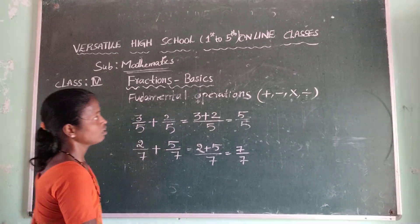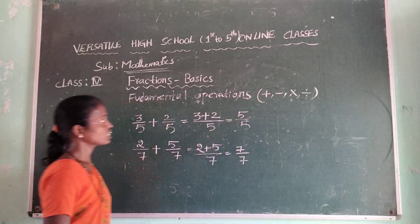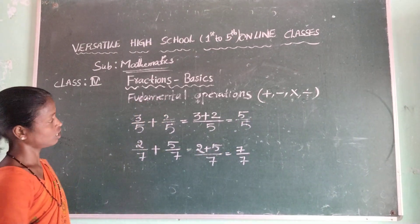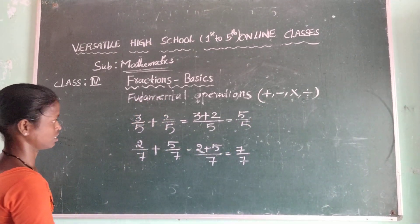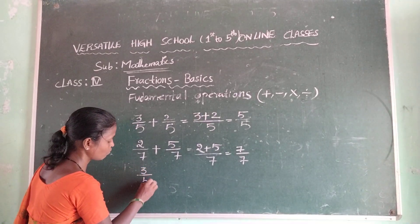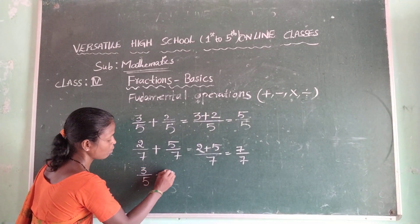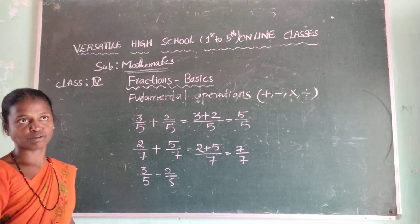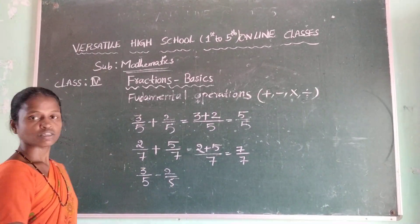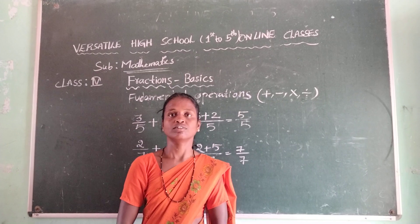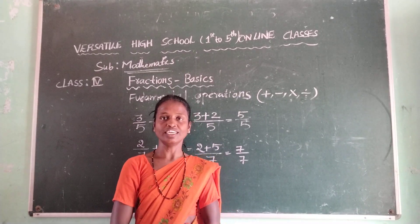Children, now we are going to the subtraction of like fractions. That is three by five minus two by five. Same example approach applies. So children, thank you. Have a good day.